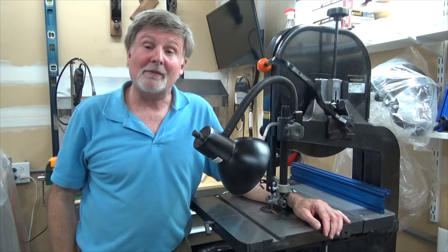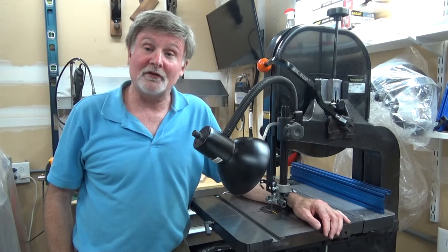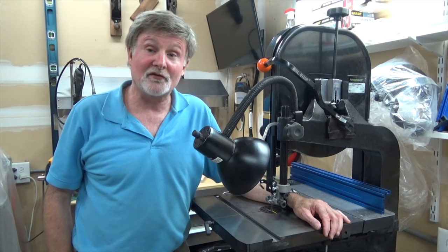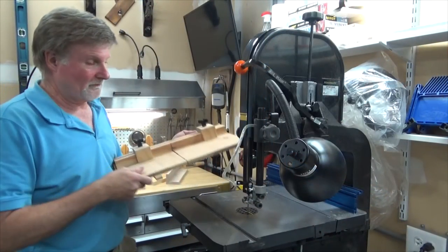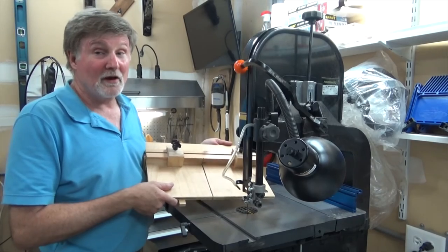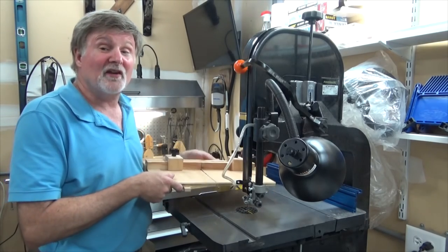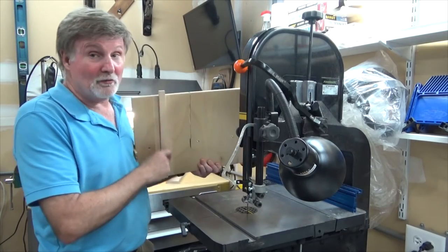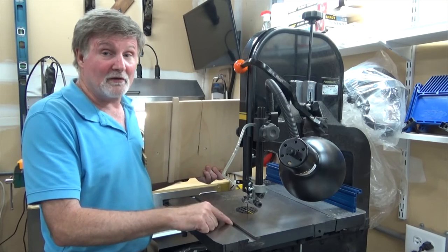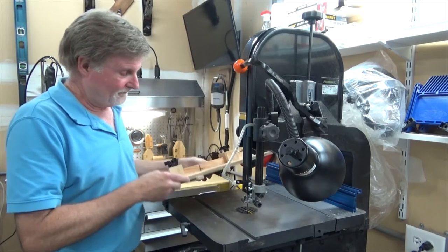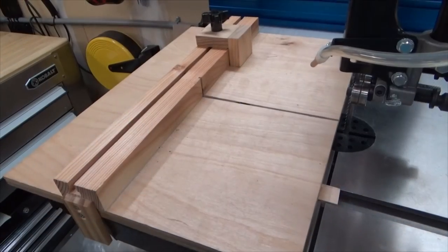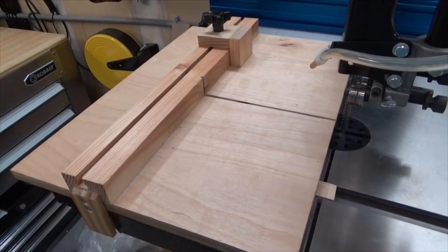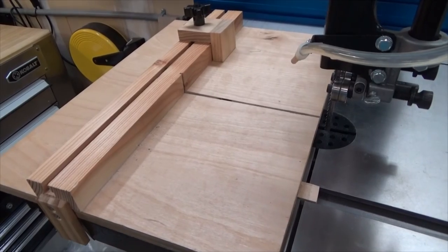Now that we've established that a bandsaw can cut perfectly straight without any compensation for bandsaw drift, I can move on and demonstrate the bandsaw sled. Here's my bandsaw sled. Unlike a table saw sled, there's a single rail because of the single slot going down the bandsaw table. The table sits in the slot.